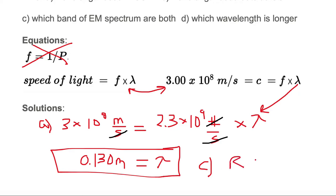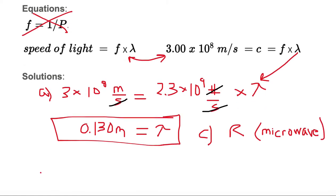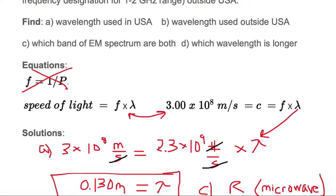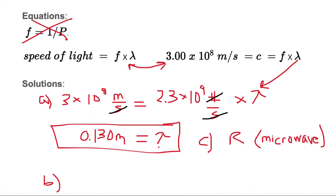We can go right into part C: 13 centimeters puts us in the radio band. Specifically, we're in the microwave region of the radio band, but still in the radio band overall. This makes sense because we're listening to XM satellite radio, which is in the radio band. Now let's work on part B. Part B is the same process as A, but our frequency is 1.4 gigahertz.